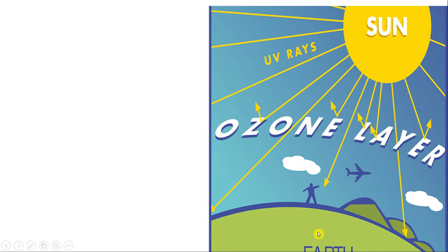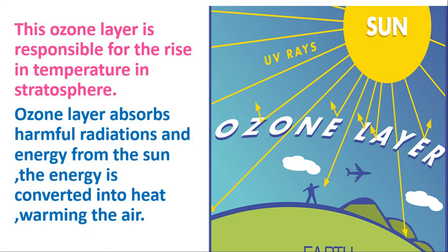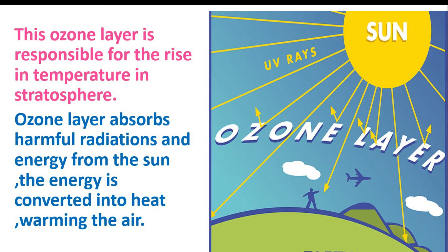In the diagram, you can see the Sun and the Earth. Between the Sun and the Earth, there is the ozone layer, which is responsible for the rise in temperature in the stratosphere. The ozone layer absorbs harmful radiation and energy from the Sun, and that energy is converted into heat, warming the air.